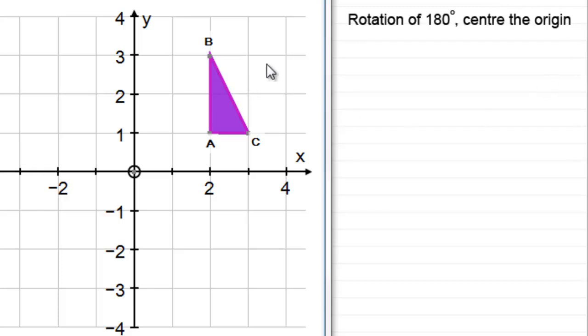I've got a shape here, a triangle ABC. If I was to rotate it 180 degrees about the origin it's going to go to this position here.